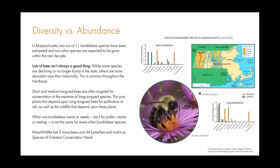That is essentially the difference between diversity and abundance. In Massachusetts, we have about 11 bumblebee species currently; two of them are extirpated — no longer found in the state: Bombus pennsylvanicus and Bombus affinis. We're expecting two more species to be gone within the next decade unless things drastically change. Having lots of bees on a property is not always a good thing — it could all be Bombus impatiens, the common eastern bumblebee. Mass Wildlife lists five more bees as well as 44 butterflies and moths as species of greatest conservation need.